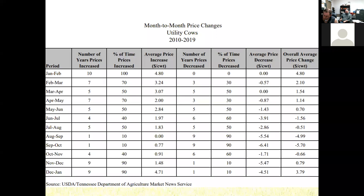If you did carry that animal through the winter months and have some to sell right now, we've already seen the biggest price increases. Looking at the drop-off, from February to March we're only expecting a $2 per hundredweight increase, and from March to April, another dollar and a half. It may not pay to keep those animals until prices are highest. We don't need to wait until May or June — we just don't see enough price increase from now until then to justify the feeding cost, especially if they're in a body condition score of five or higher.